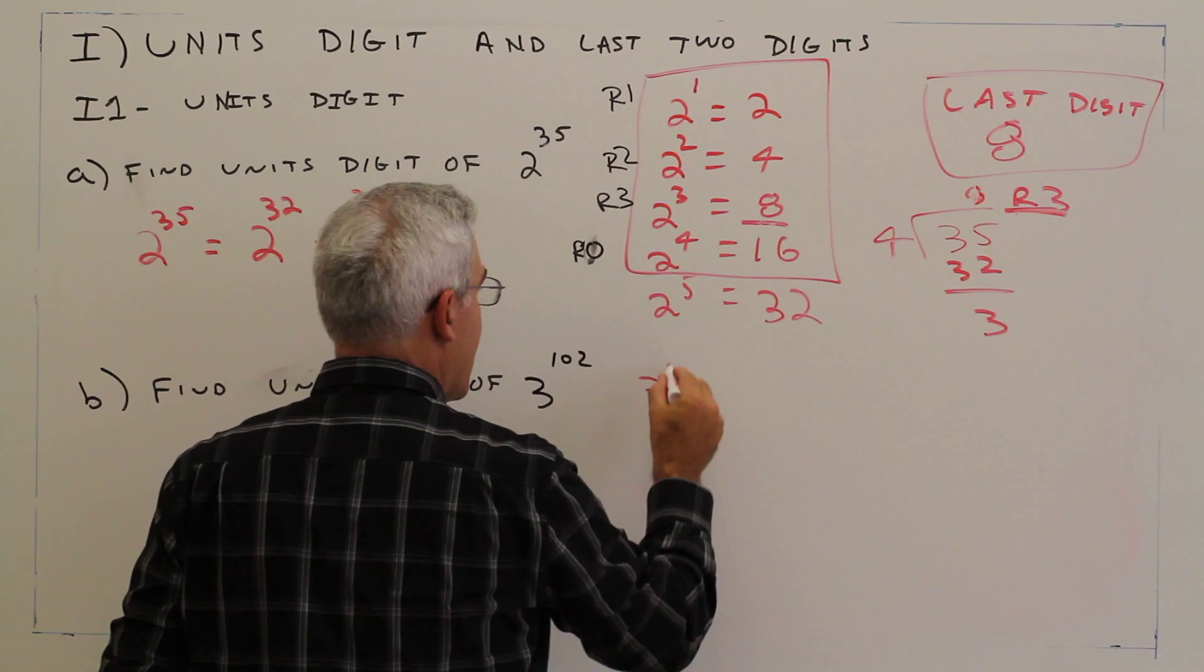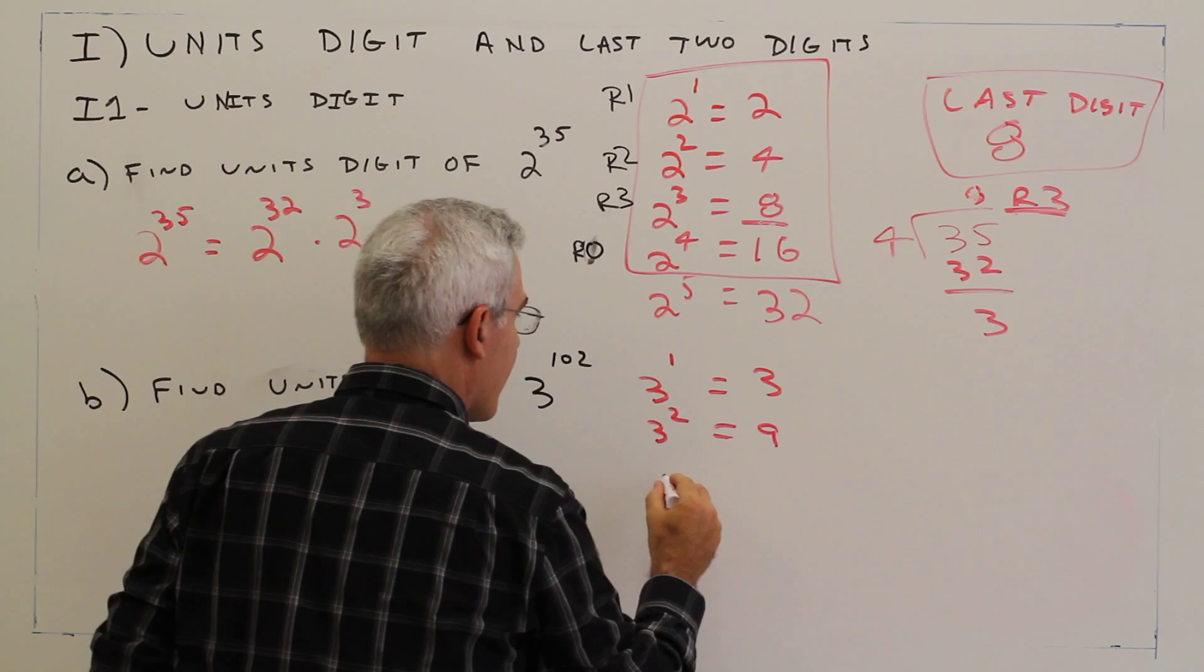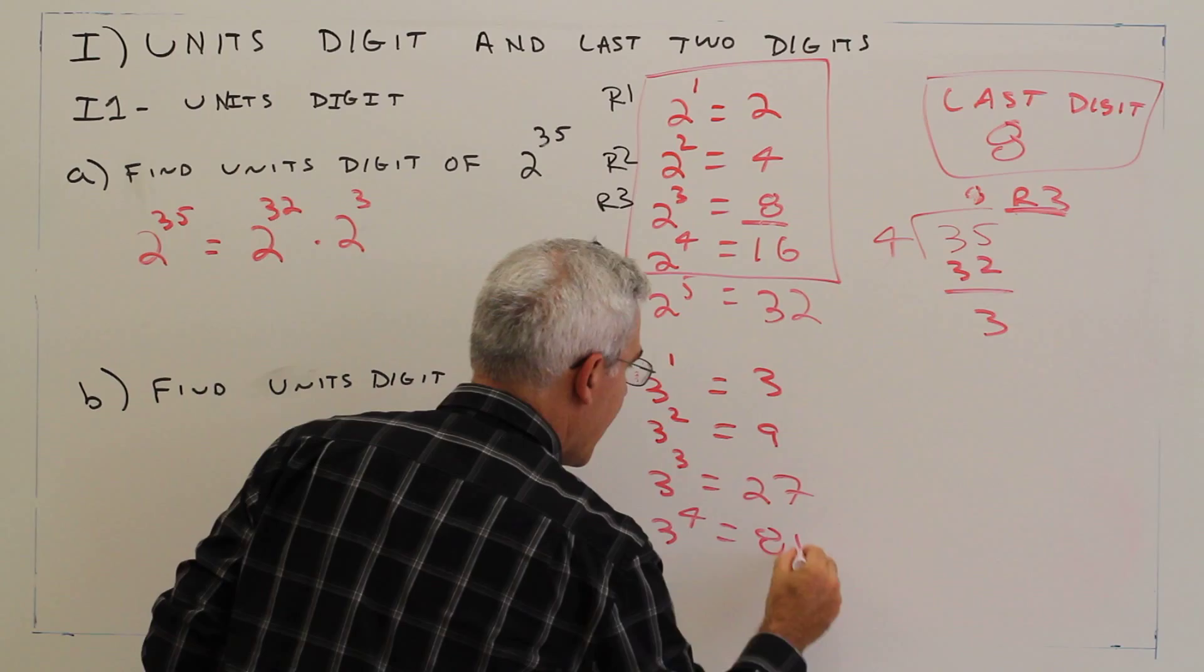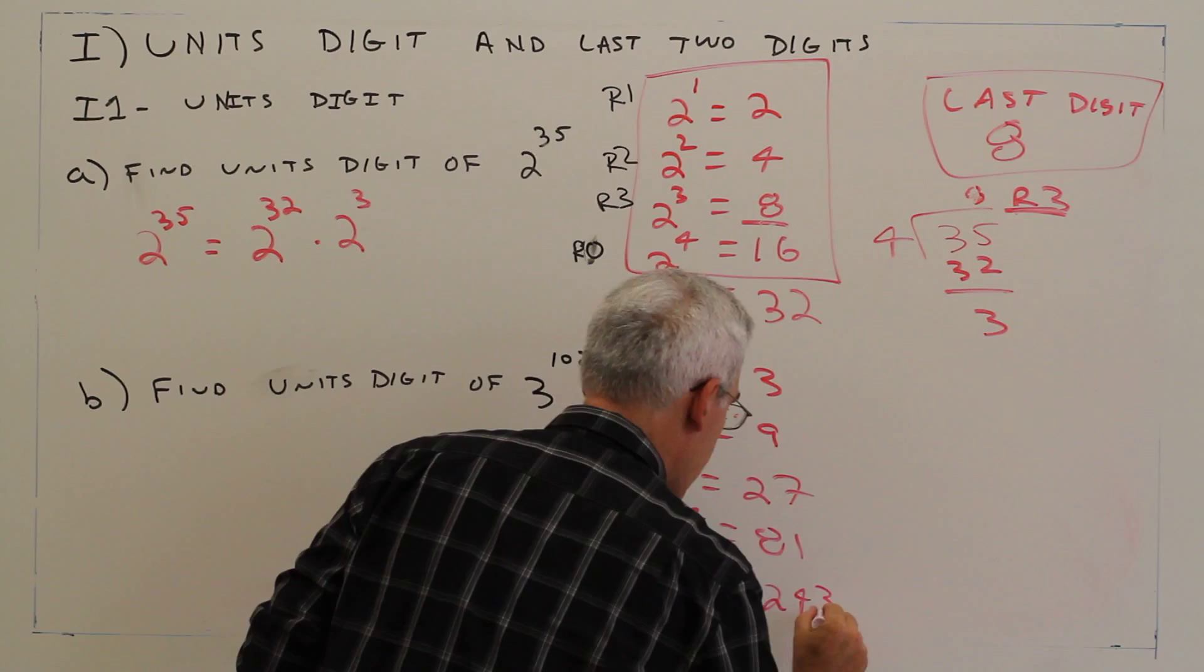So 3 to the 1st, 3 squared, etc. 3 to the 1st is 3, 3 squared is 9, 3 cubed is 27, 3 to the 4th is 81, 3 to the 5th is 243.